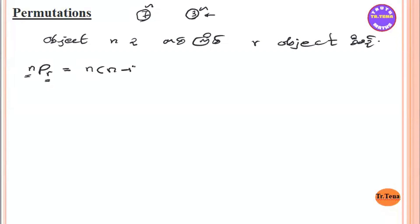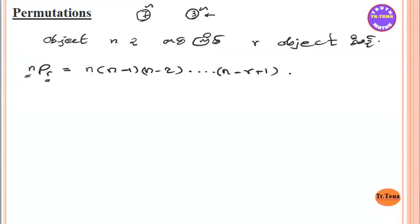NPR is: N, N-1, N-2, and so on, up to N-R plus 1. Now if you look at the object season, the object is called N factorial by N minus R factorial.